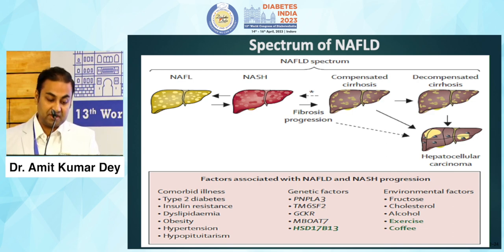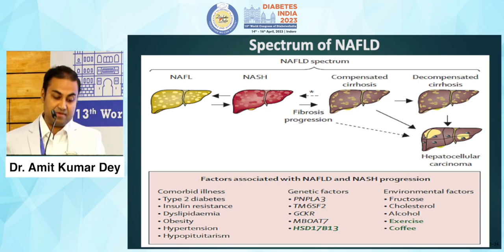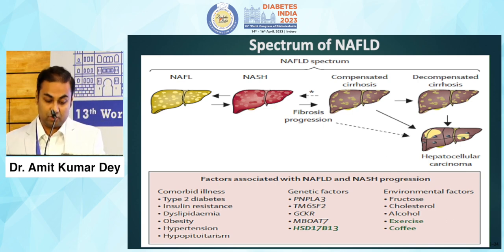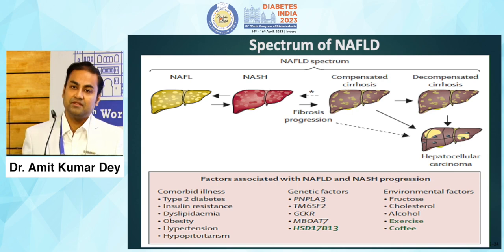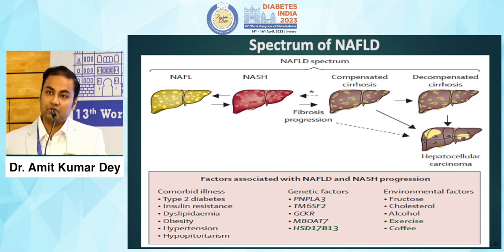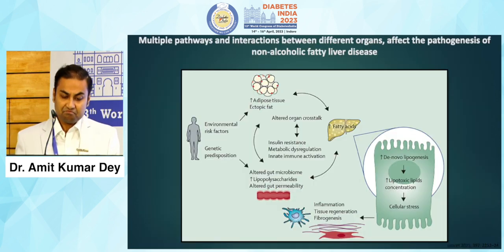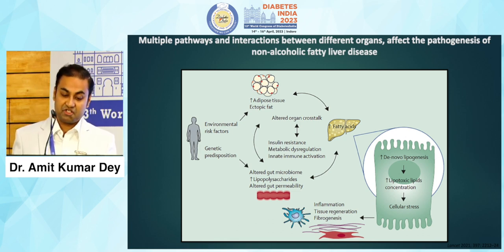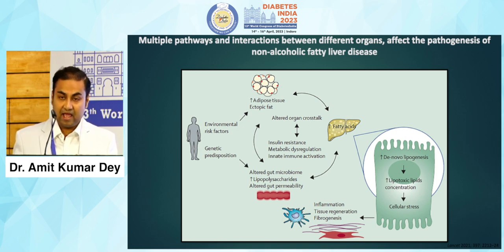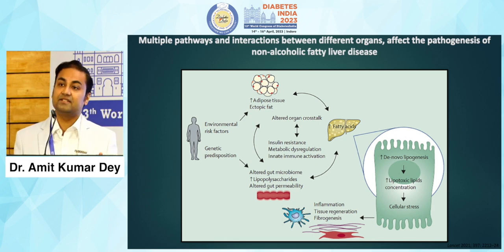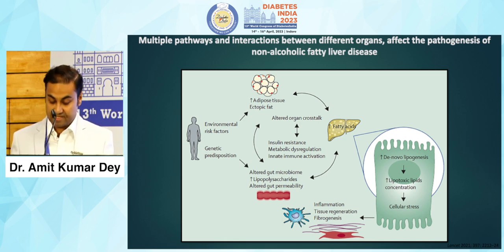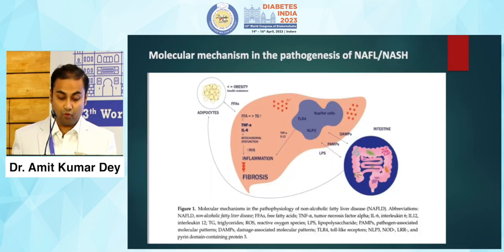Comorbid conditions like type 2 diabetes, insulin resistance, dyslipidemia, obesity, hypertension, and hypopituitarism are associated, and various genetic factors are also involved. This is important because there is a multiple-hit hypothesis which leads to the progression and development of NAFLD in patients with these comorbidities. There are multiple pathways and interactions between different organs that affect the pathogenesis, and because of this multi-hit pathway, it gives an option of targeting the disease through various organs in multiple ways — which is where the evolution of newer drugs is focusing.